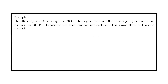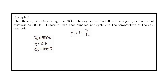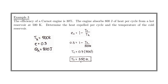Example three: the efficiency of a Carnot engine is 30%. The engine absorbs 800 joules of heat per cycle from a hot reservoir at 500 Kelvin. We want to determine the heat given off per cycle and the temperature of the cold reservoir. We know TH, QH, and the efficiency, so we use the Carnot efficiency formula: 0.3 equals 1 minus TC over 500. Rearranging and solving, the temperature of the cold reservoir is 350 Kelvin.